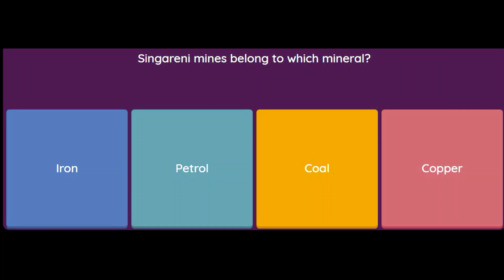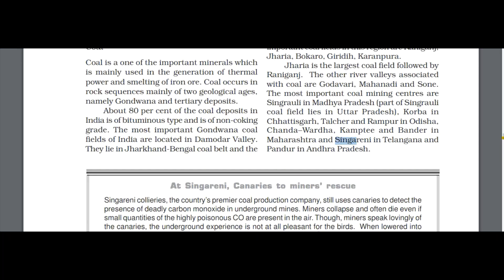This brings us to the last question of Part One. Singareni mines belong to which mineral — iron, petrol, coal, or copper? The answer is coal. Jharia is the largest coal field, followed by Raniganj. Other river valleys associated with coal are Godavari, Mahanadi, and Son. Important coal mining centres are Singrauli in Madhya Pradesh, Korba in Chhattisgarh, Talcher and Rampur in Odisha, Chanda, Vardha, Kampti, and Bandir in Maharashtra, and Singareni in Telangana and Pandur in Andhra Pradesh.